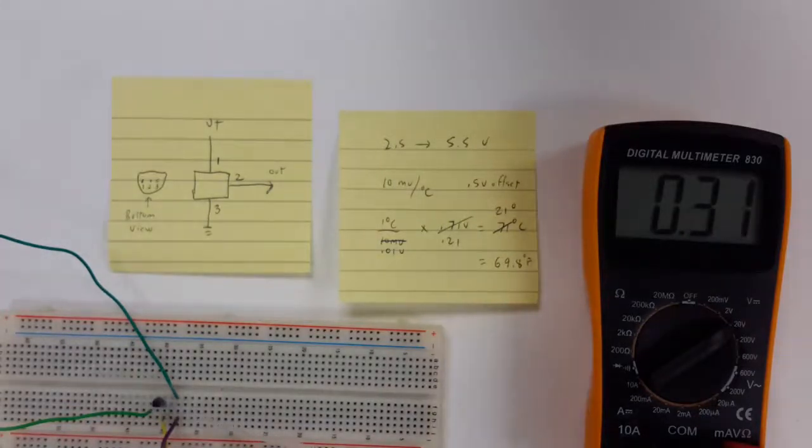You can see that the temperature, the voltage there, has dropped dramatically. Right now, we're reading about 0.04 volts.